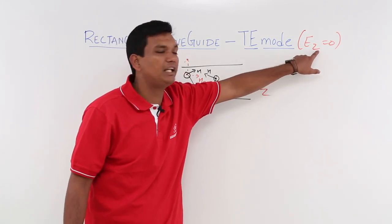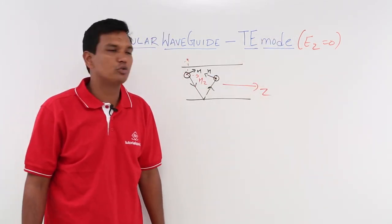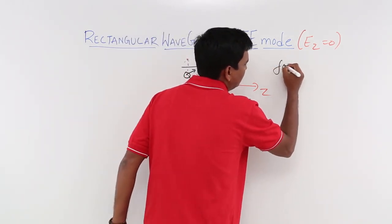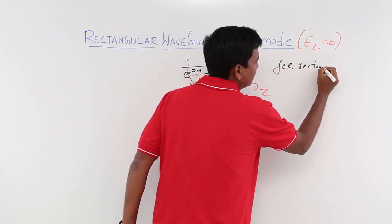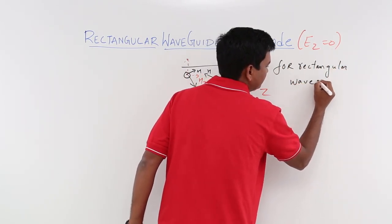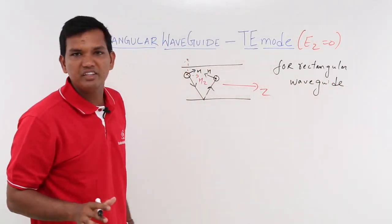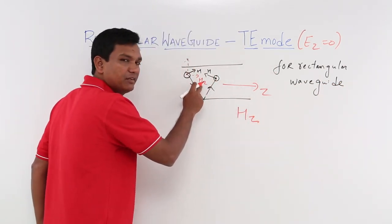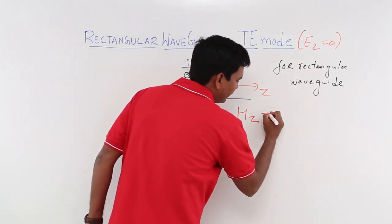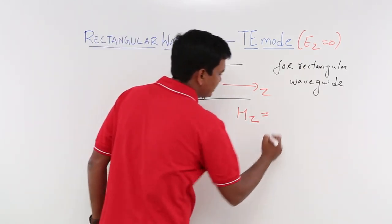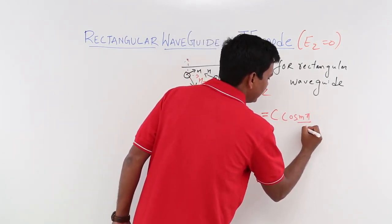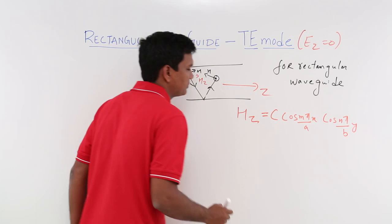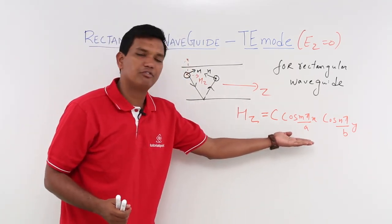This is what is called as transverse electric mode — where your electric field will not have any component along the direction of propagation. So we have understood what TE mode is. For rectangular waveguide, if you derive using the wave equation, you will get the expression of Hz. Because we said that Hz will have a component — Ez would be 0 but Hz will exist. If you refer your books, you will get the Hz expression as: Hz = C · cos(mπ/a · x) · cos(nπ/b · y). This will be the expression of your Hz.